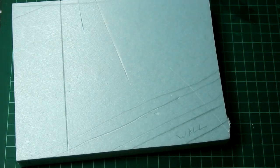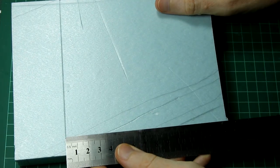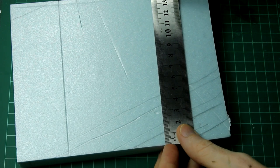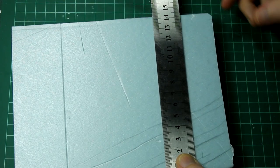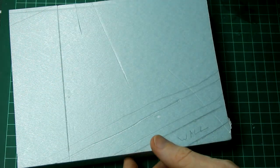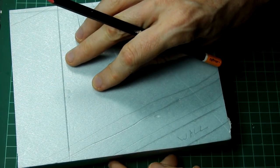So to start the diorama I took some XPS foam and cut it to approximately 145 mm square. The reason I chose XPS foam is because I need to dig down into this to make a ditch and you can obviously do that with something like a picture frame.